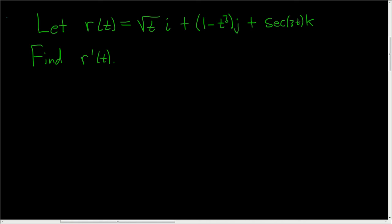We're given a vector-valued function and asked to find the derivative. Let's work it out. First, let's rewrite our function in a way that will allow us to take the derivative easily. The square root of t can be written as t to the 1/2, and then here we have the i.